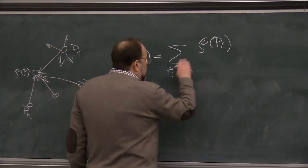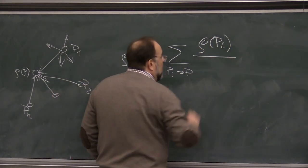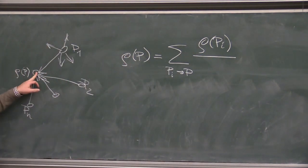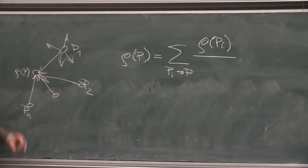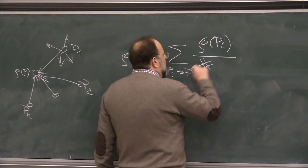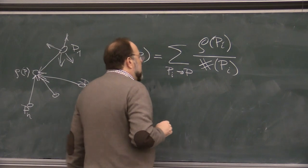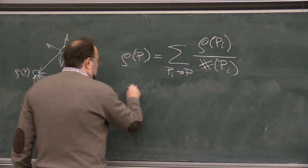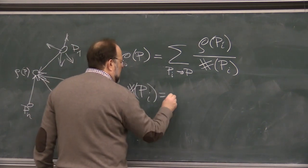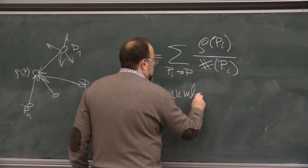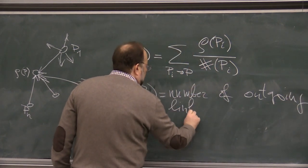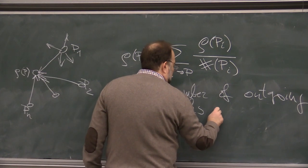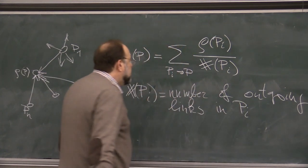So ideally, you would want to have a rank of each page to be sum of the ranks of all web pages PI, so that PI points to P. So this notation we will use a lot. PI arrows P means PI has an outgoing link pointing to page P.